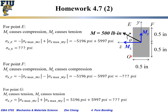At point G (lower-right corner): both Mz and My cause tension, so σ_G = +|σ_Mz| + |σ_My|. Adding these together gives the final tensile stress at G. That concludes the homework for Chapter 4.